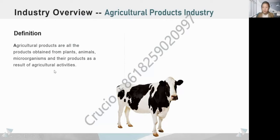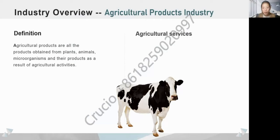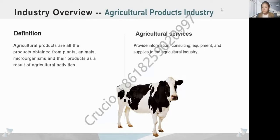Firstly, the definition of agricultural products is all the products obtained from plants, animals, microorganisms and their products as a result of agricultural activities. For services, this industry also provides services concerned with information, consulting, equipment, and supplies to the agricultural industry.